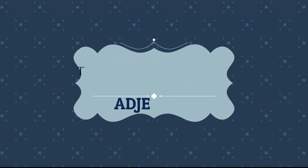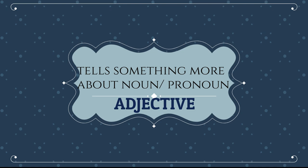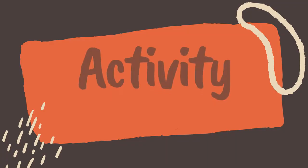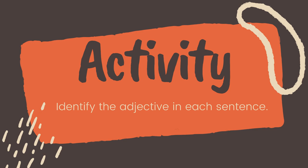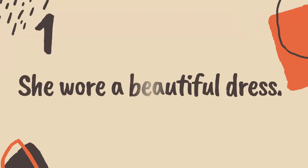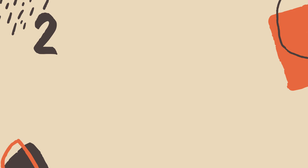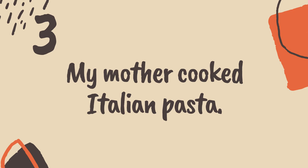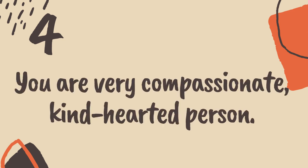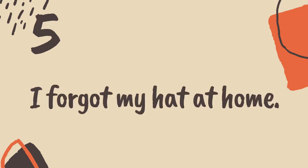Just keep in mind that an adjective is a word that tells something about the noun or pronoun. Now, let us have an activity — identify the adjectives in the following sentences: 1. She wore a beautiful dress. 2. That cake belongs to me. 3. My mother cooked Italian pasta. 4. You are a very compassionate, kind-hearted person. 5. I forgot my hat at home.